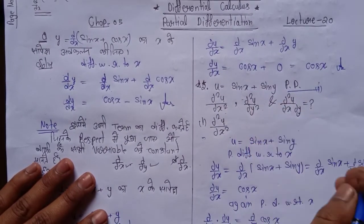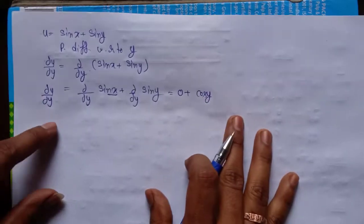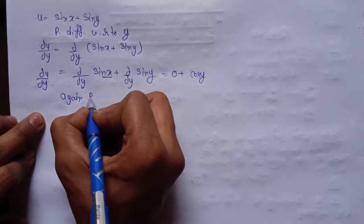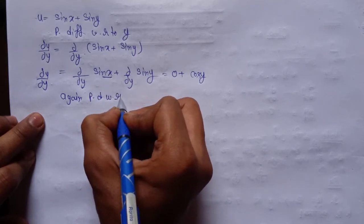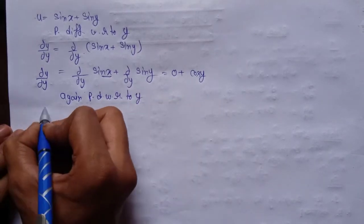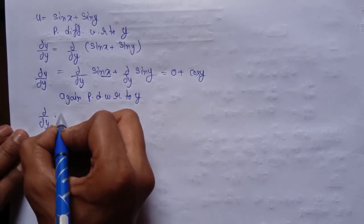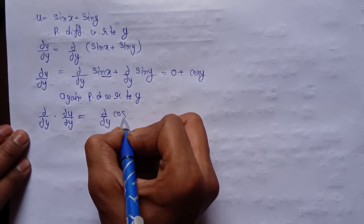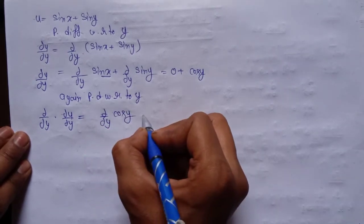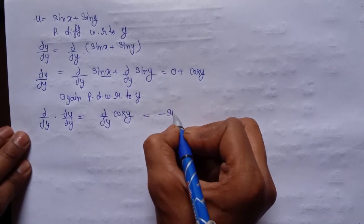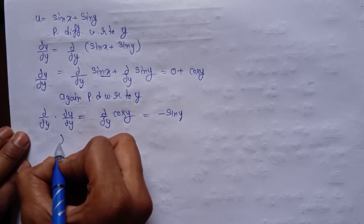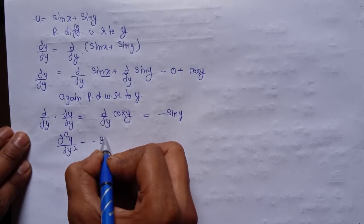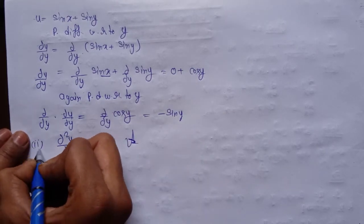We have found ∂u/∂y, but we need ∂²u/∂y². So: ∂²u/∂y² = ∂/∂y of (∂u/∂y) = ∂/∂y of cos y. The differentiation of cos y is -sin y. Therefore ∂²u/∂y² = -sin y. That is our second answer.